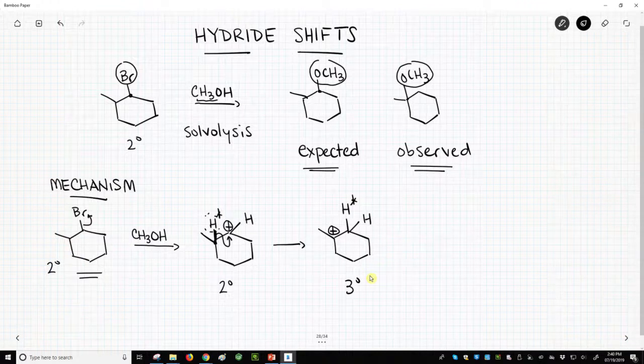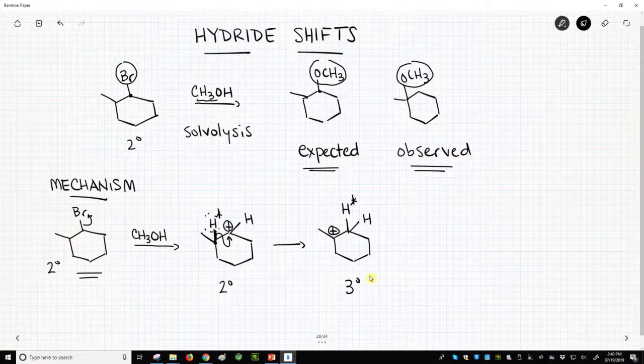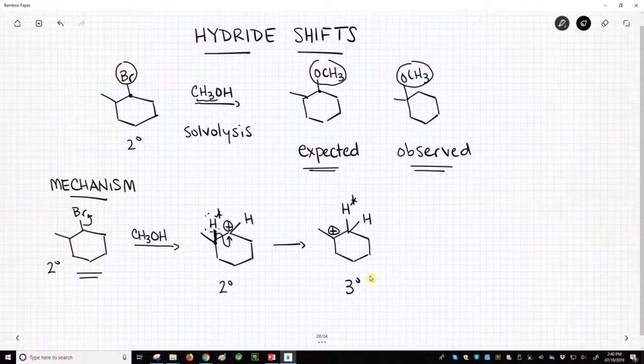Now, one qualifier - you can't have hydride shifts all the way across a molecule. The hydride shift occurs from a neighboring carbon, so don't think you can move hydrogens anywhere you want in a carbocation. You can't. You can only move them to the next-door carbon.